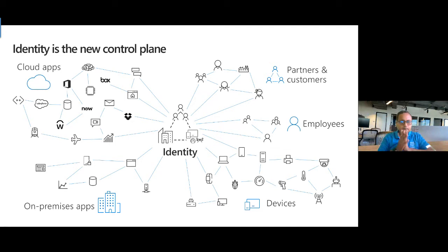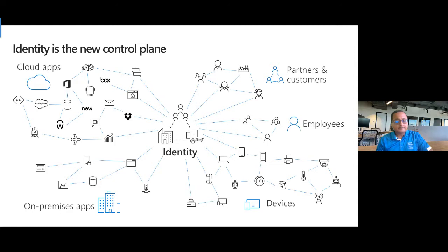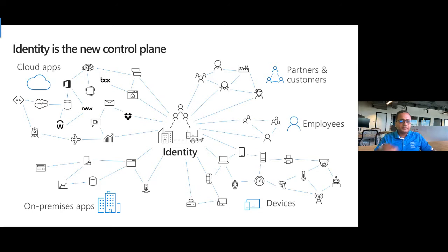This identity-based access model needs to be extended even for on-prem applications that still sit behind the data center — that doesn't make them impervious to these attacks. Especially with insider risk being a major player in data breaches, how can I keep a keen eye not just on external attacks but also attacks that originate from within? Leveraging a modern identity and access management solution and extending it for on-prem applications will actually boost your overall threat protection posture.